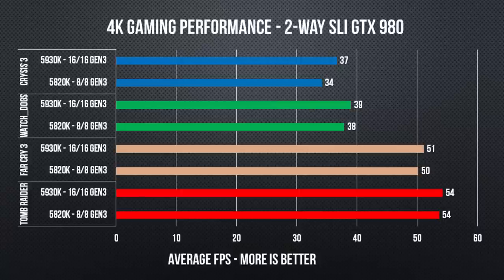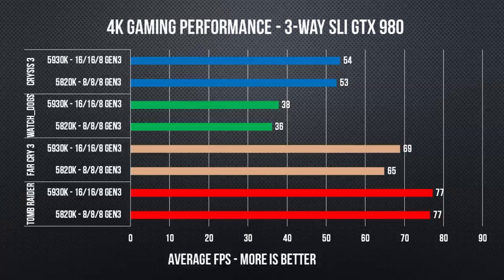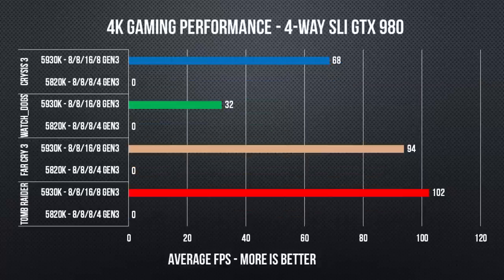They both ran the same, so there you go. In 3-way SLI, both CPUs have to give up at least one 16x slot, but again the results are not really affected in any way beyond your standard variance from one run to another.